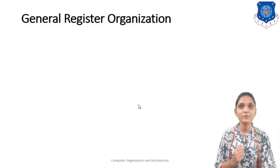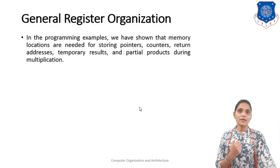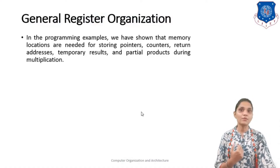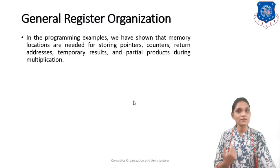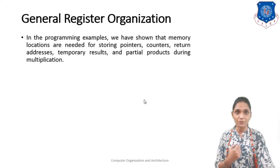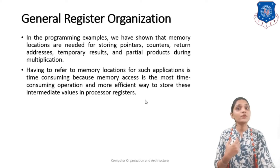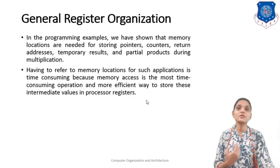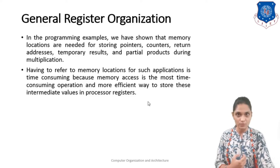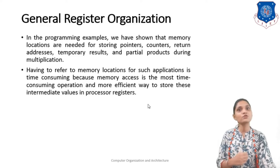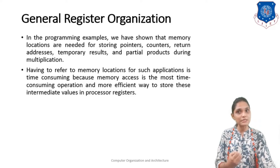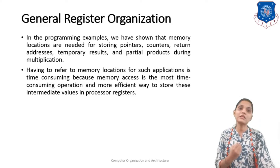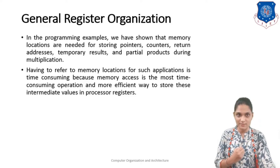In the programming example, we have seen that memory locations are needed for storing pointers, counters, return addresses, temporary results, and partial products during the multiplication example. Having referred to a memory location for such applications is time-consuming because memory access is the most time-consuming operation. A more efficient way to store these intermediate values is in processor registers.